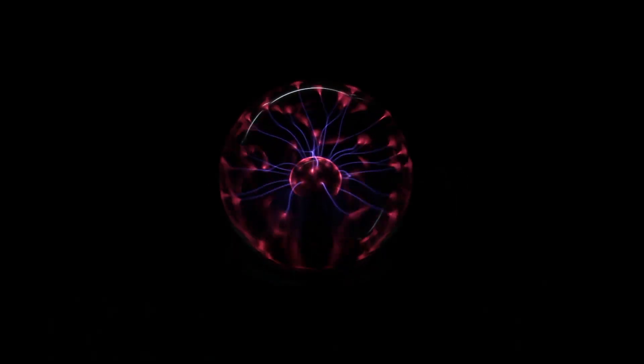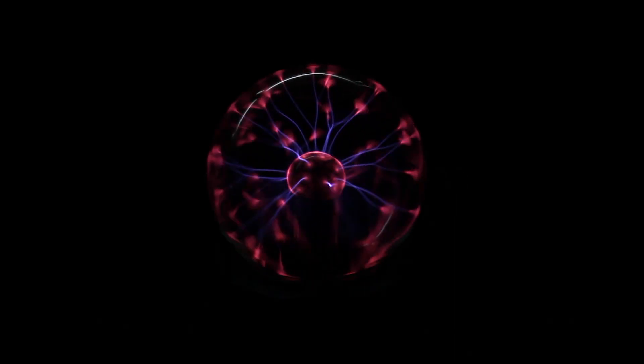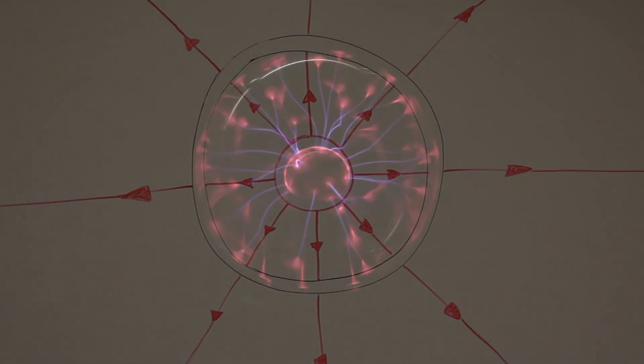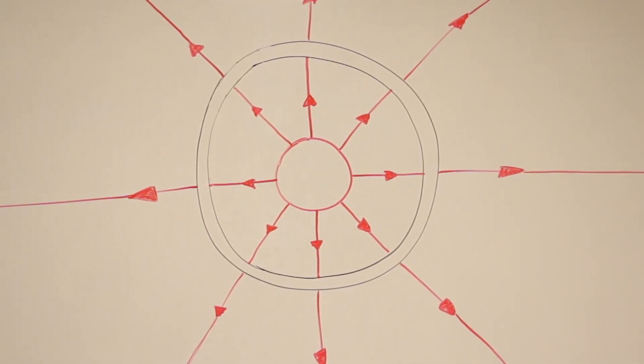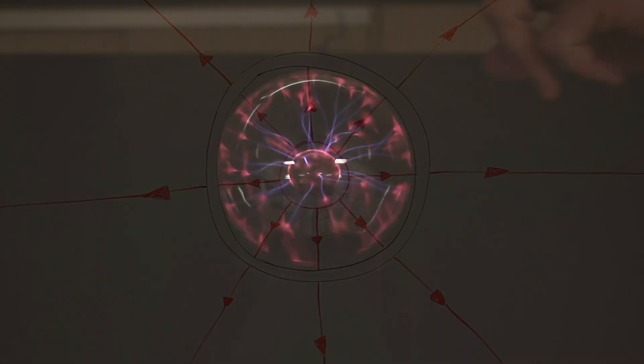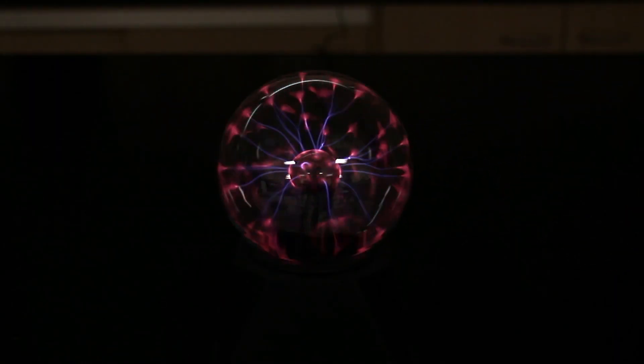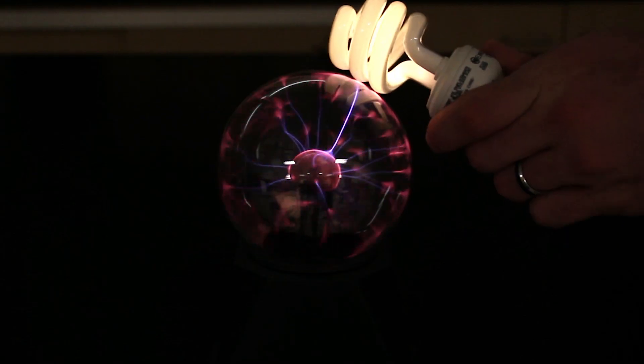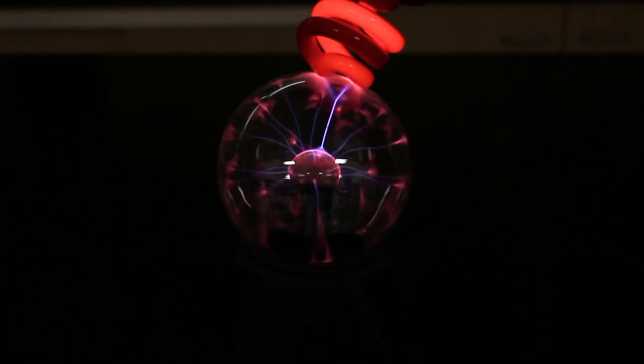The plasma globe itself already looks like an electric field. Specifically, it's the electric field of a spherical charge in a grounded conductor. That's just the inside, but on the outside of the globe is where the real action is. You can see the electric field invisibly extends far beyond the glass when you use it to illuminate fluorescent bulbs.